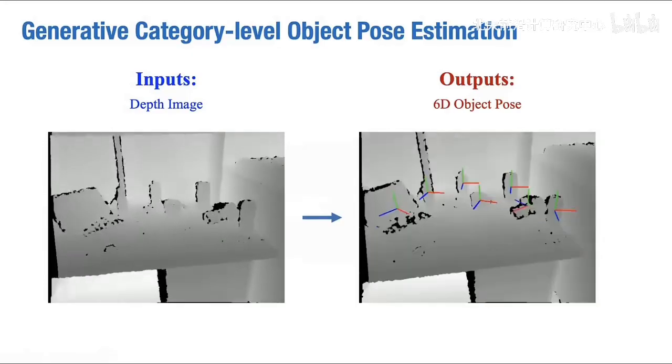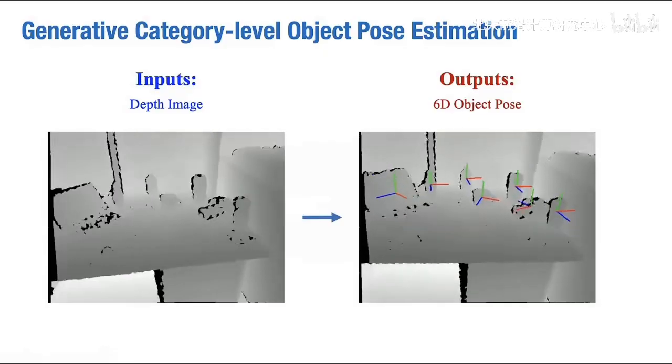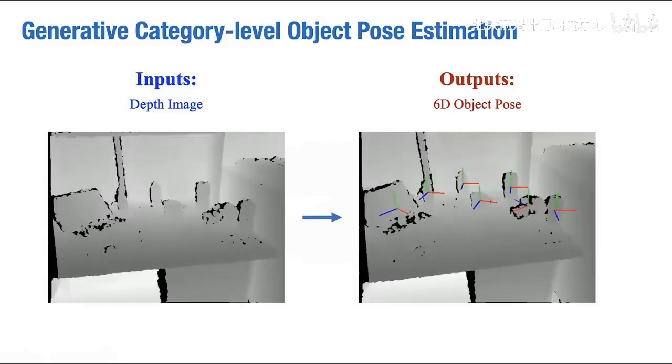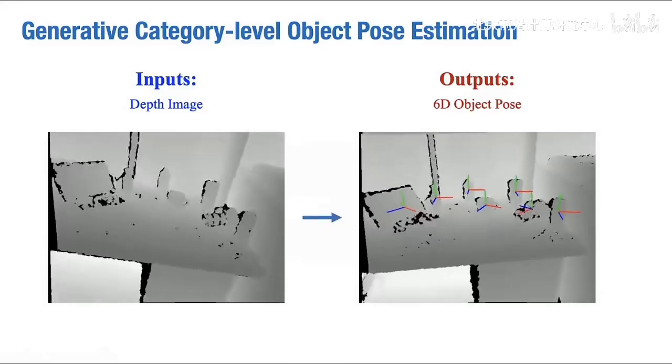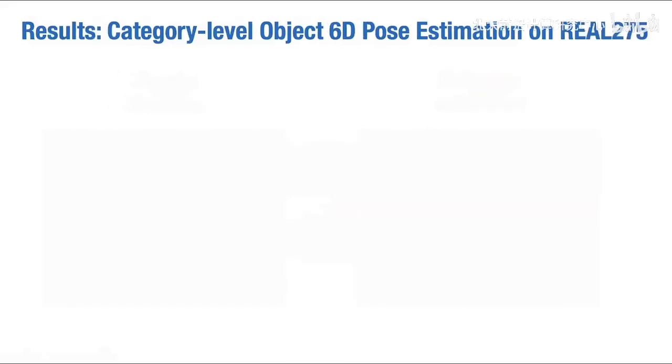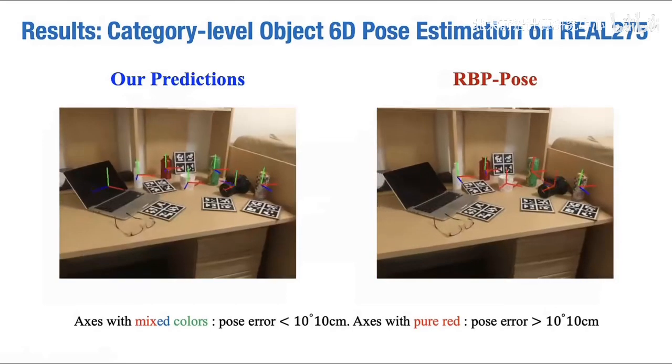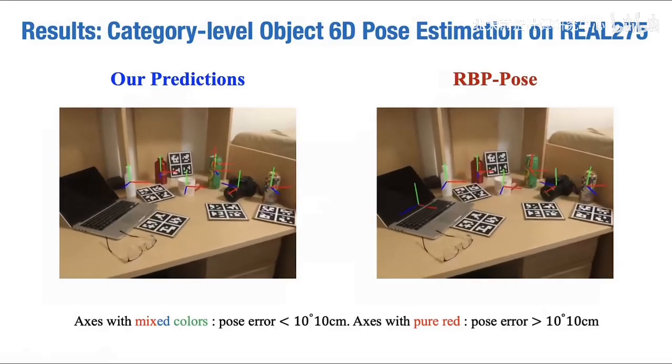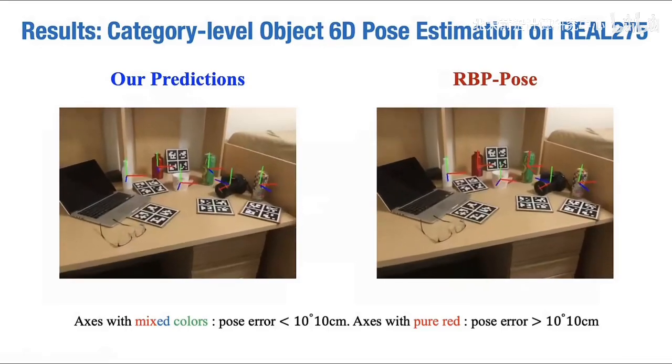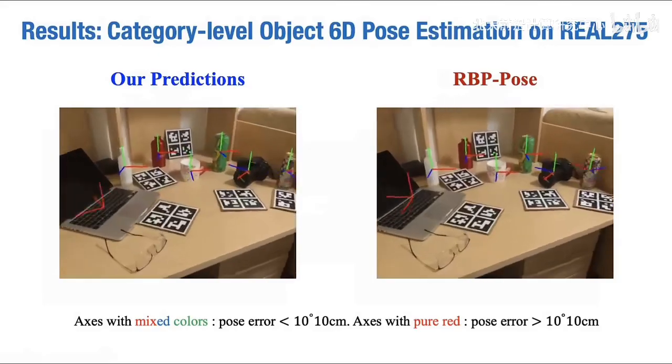our goal is to estimate the 6 degrees of freedom poses of objects within the same category without CAD models. Here we show comparison between our method and the state-of-the-art method RBP pose. Note that axes with mixed colors indicate better predictions and axes with pure red indicate worse predictions.